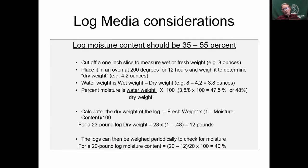Log moisture is critical. Using Tradd Cotter's book, getting the moisture right is what most people don't do correctly. You compare wet weight to dry weight periodically; logs need to be at 35 to 55 percent moisture. Most people just throw them outside and hope for the best — which is what I did — and three years later I finally found about three shiitakes on one of my logs. The fungus never gives up even if you do.